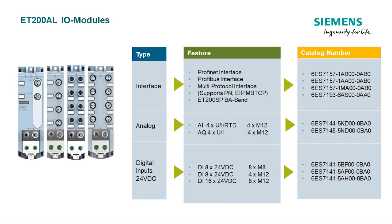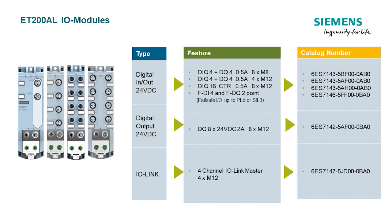Let's look at the selection of I/O modules available. Interface modules can be PROFINET, PROFIBUS, Multifieldbus — that's PROFINET, EtherNIP, or Modbus TCP — or the BASand terminal used on the ET200SP. I/O types include analog, digital in, and digital in/out. One specific module to note is the 16 DI/DO module that will support up to four counters at up to 2kHz.